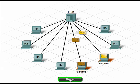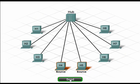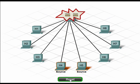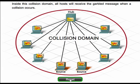If two devices try to use the network simultaneously, as seen in this animation, a collision occurs. When a collision occurs, messages become garbled or unreadable, and the network must reset itself before data delivery can again be attempted. The area of the network where a host can receive the garbled message resulting from a collision is called a collision domain.